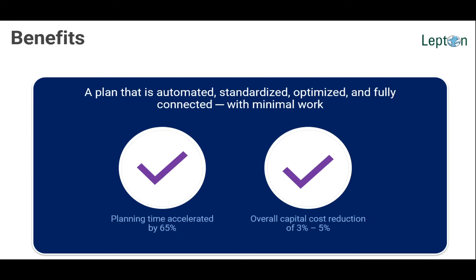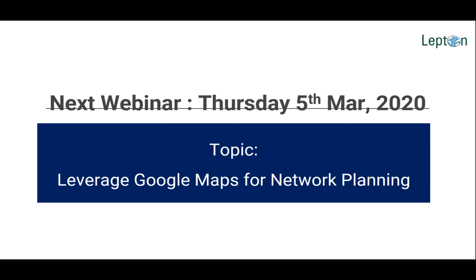In summary, it's an automated solution that is standardized — once the rules are set, the same rules are applied again and again, so the software produces the same standardized design using the same engineering principles. And of course it's optimized using all the algorithms and optimization mechanisms, and everything is fully connected as we have seen in the single line diagrams. That concludes our presentation and demonstration of our Smart Planner. We intend to continue this series of webinars in the upcoming months. The next topic chosen is leveraging Google Maps for the whole planning exercise, which we will discuss in a month's time.